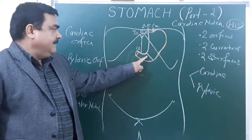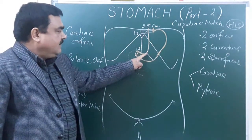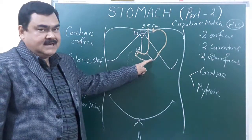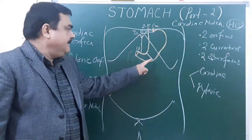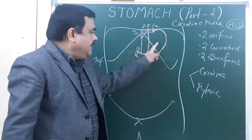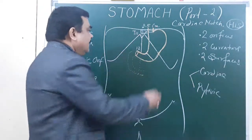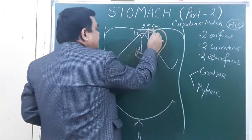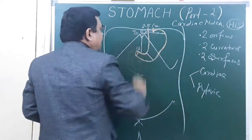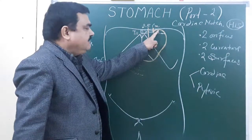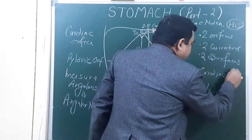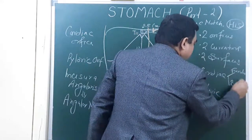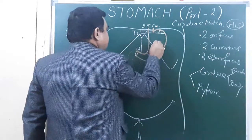The line passes from the angular notch to the greater curvature in a downward and left direction, dividing the stomach into the cardiac part and the pyloric part. The cardiac part is further divided by a horizontal line passing from the cardiac orifice into two parts: the upper part is the fundus, and the lower part is the body.